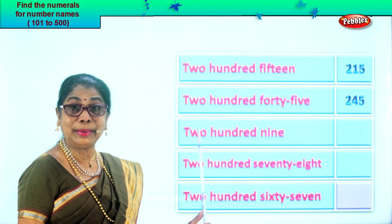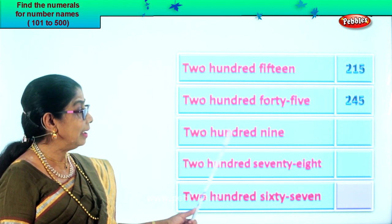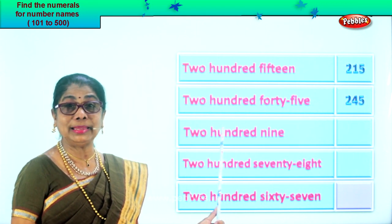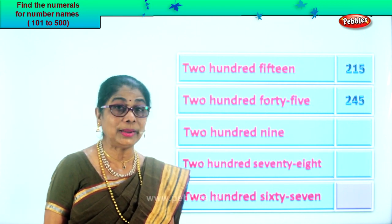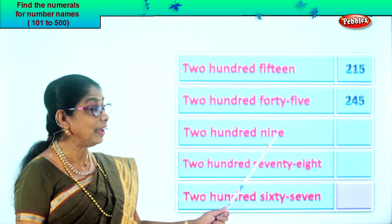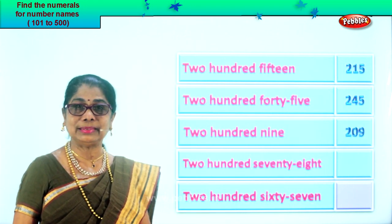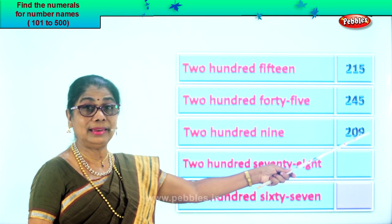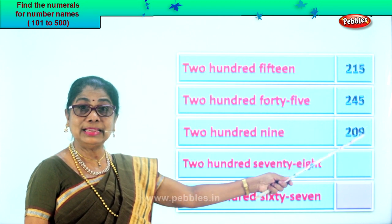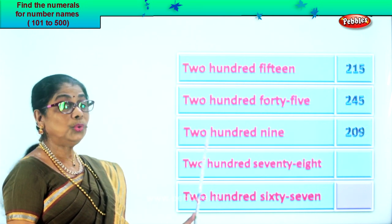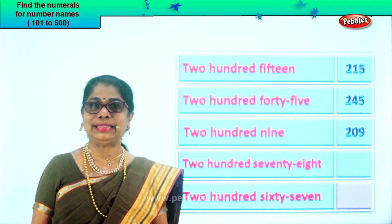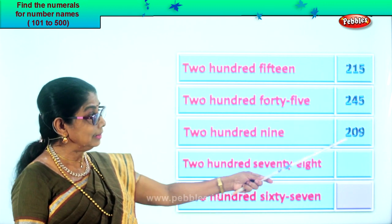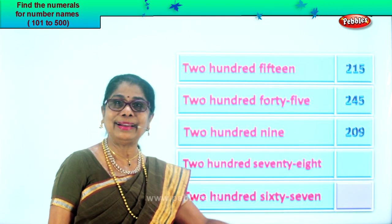Let's take the next number name: two hundred nine. Here you have two in the hundredth place. What's in the tens place? Zero. And you have nine in the ones place. Two hundred nine — nine in the ones place, zero in the tens place, two in the hundredth place. Two hundred nine.